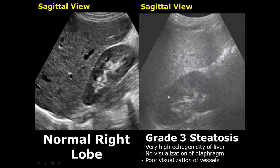In grade three steatosis, there is no visualization of the diaphragm, and overall there is poor visualization of the liver structures such as the vessels.